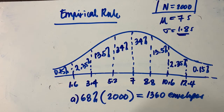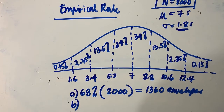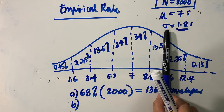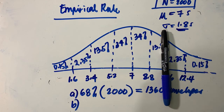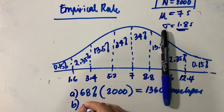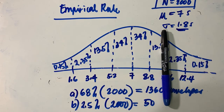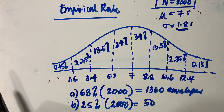For letter B, we are looking for the number of envelopes that took more than 10.6 seconds to prepare. Since 10.6 is at two standard deviations above the mean, 'more than' means we take the percentage to the right: 2.35% plus 0.15% equals 2.5%. So 0.025 times 2,000 gives us 50 envelopes processed in more than 10.6 seconds.